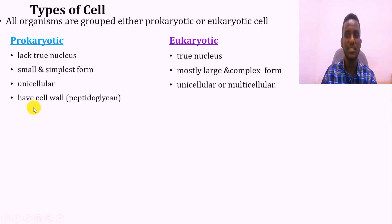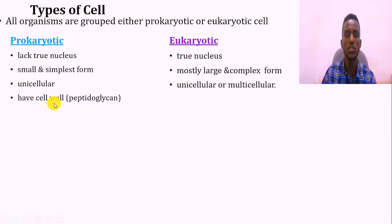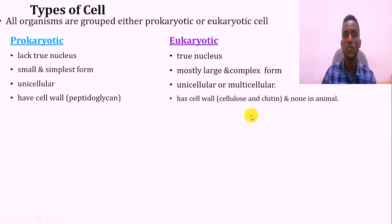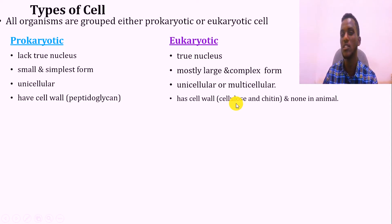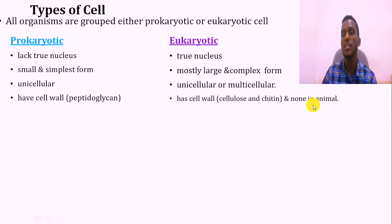Based on the presence, absence, or composition of the cell wall: prokaryotic cells have a cell wall made of peptidoglycan. Eukaryotic cells may also have a cell wall but their composition is different. In case of eukaryotic, plants have cellulose, and fungi have chitin. But the cell wall is absent in the case of animal cells.